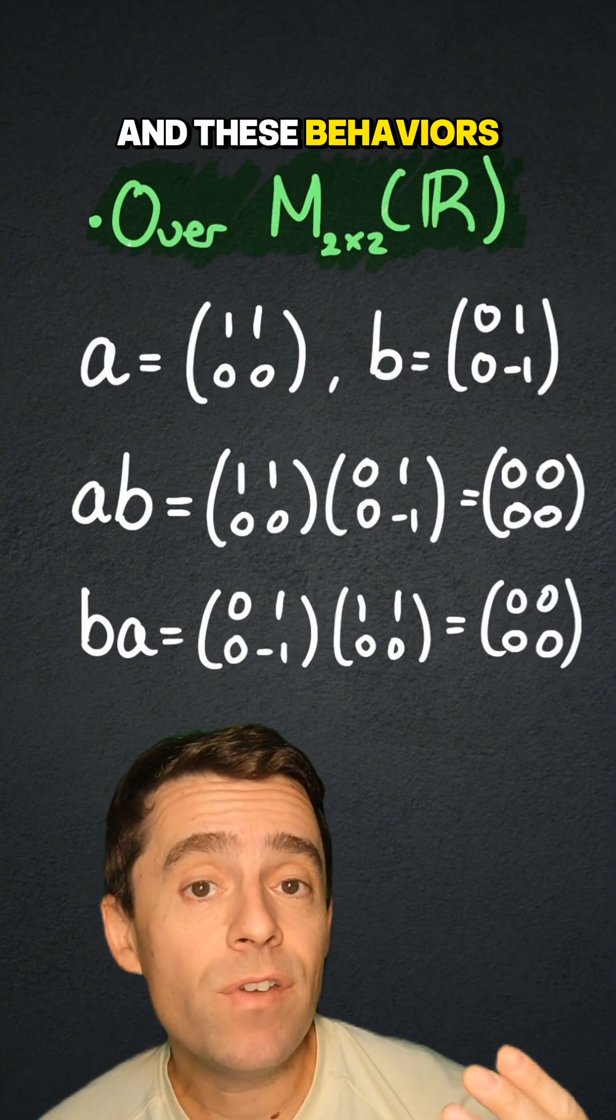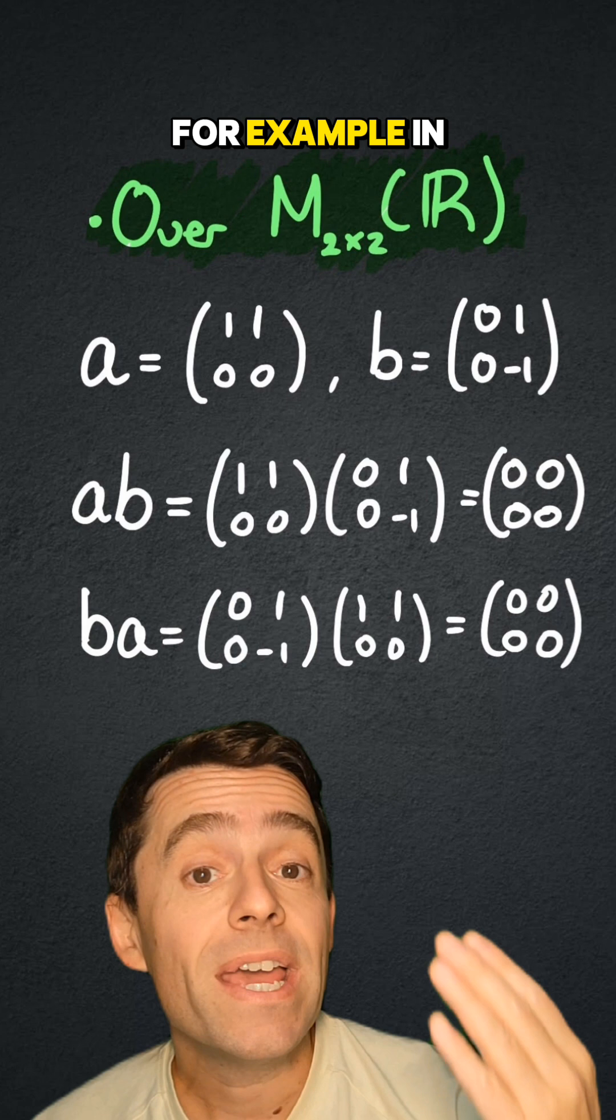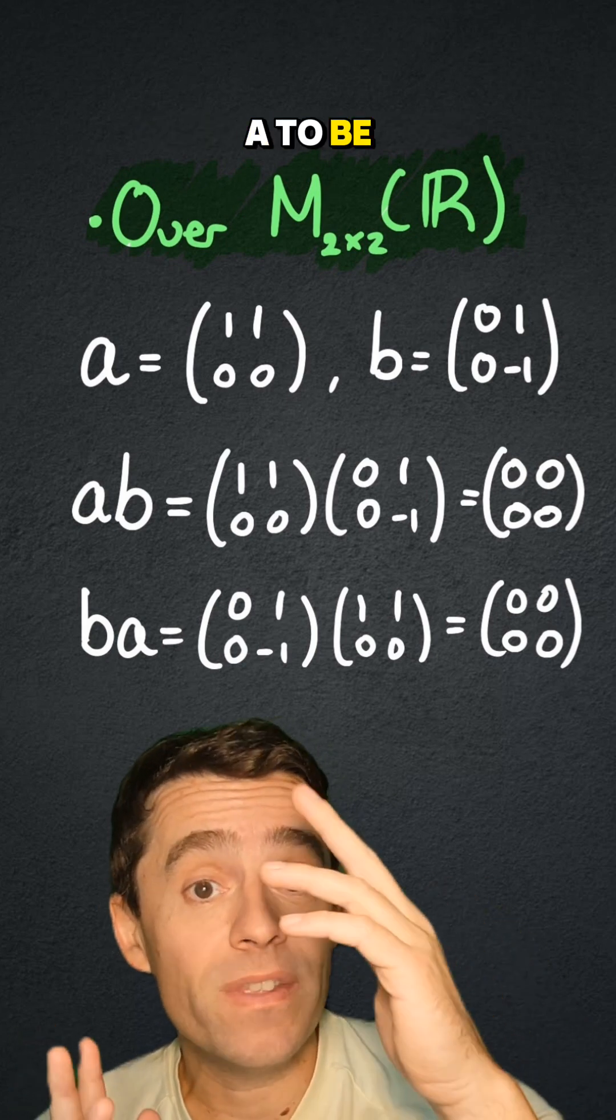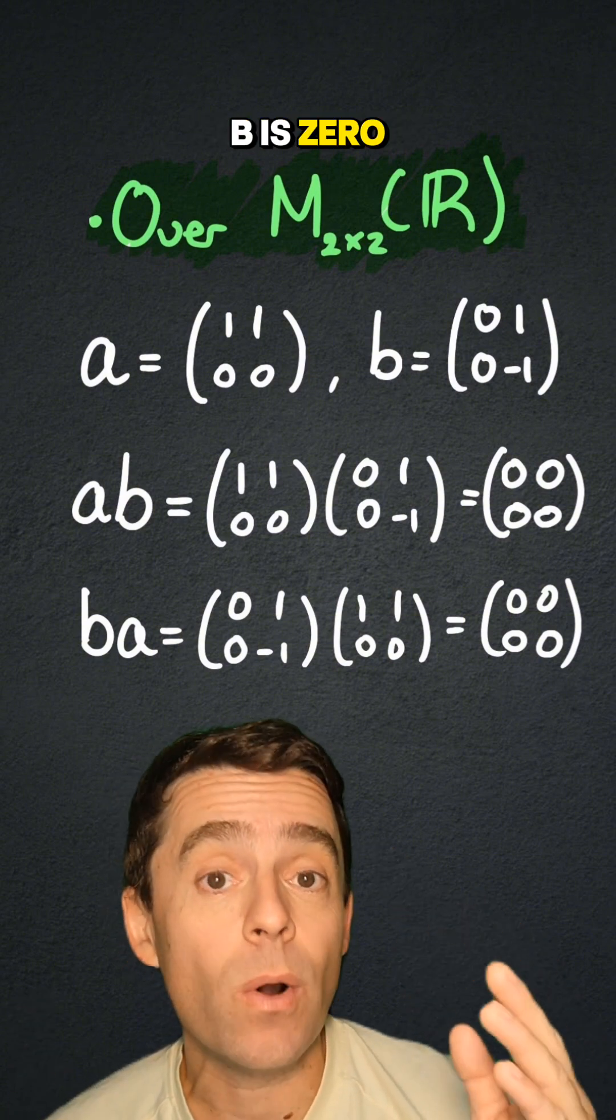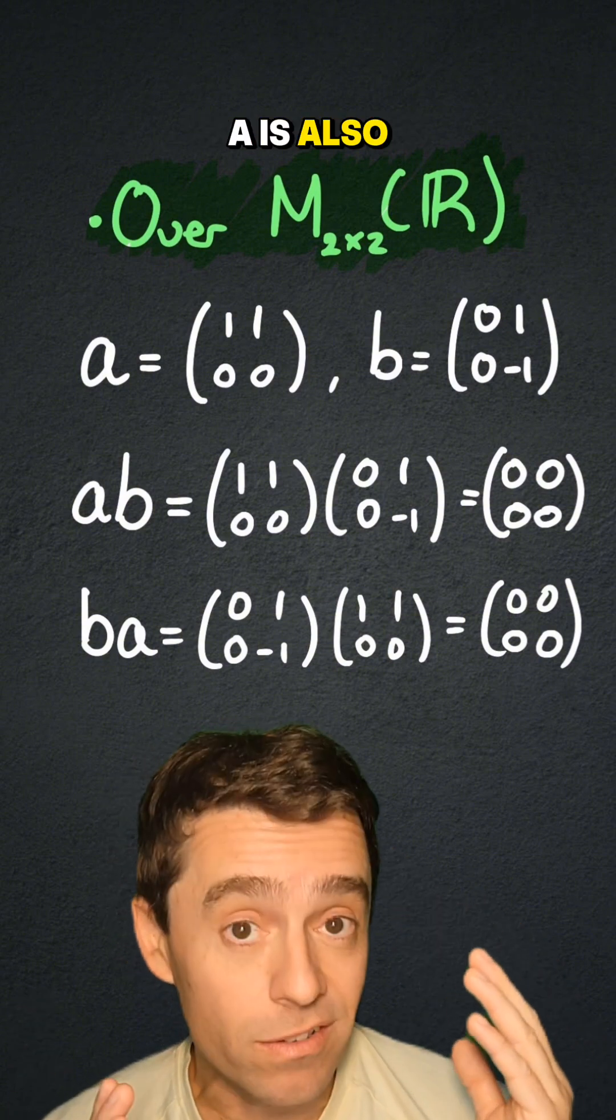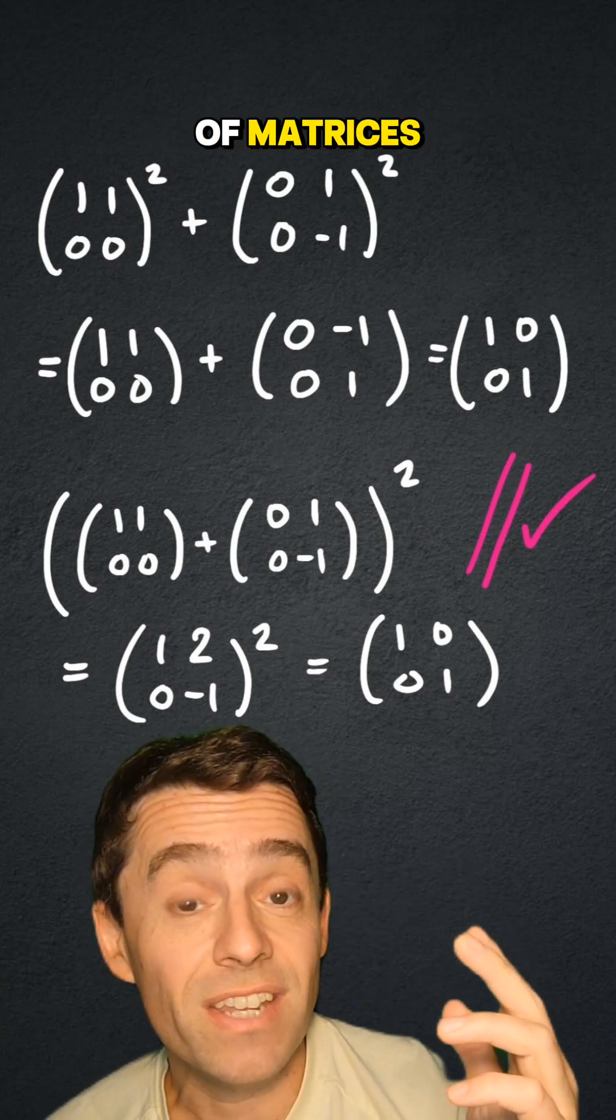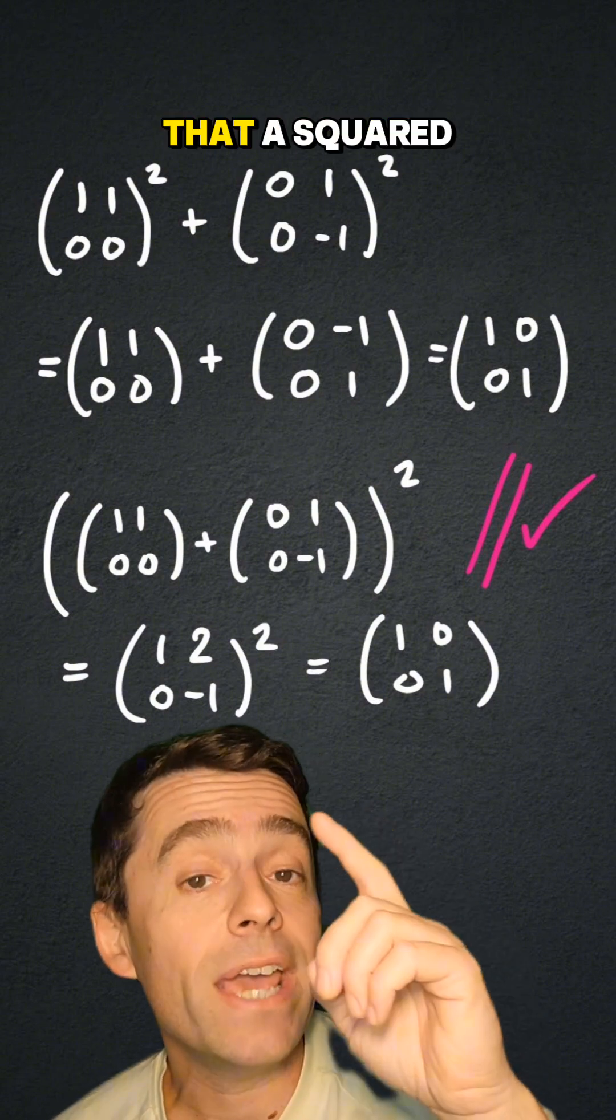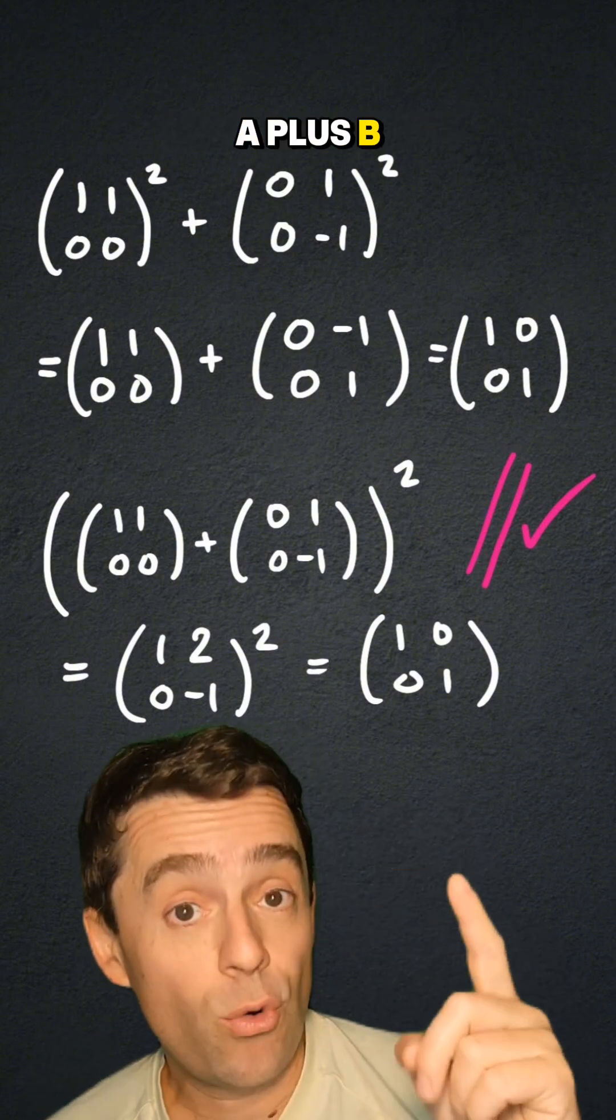And these behaviors can occur in rings of matrices. For example, in the two by two matrices with real coefficients, if I take a to be this matrix and b to be that matrix, I do have that a times b is zero and b times a is also zero. And therefore, we can verify that for these pair of matrices, even though the number two is non-zero, we do have that a squared plus b squared is equal to a plus b squared.